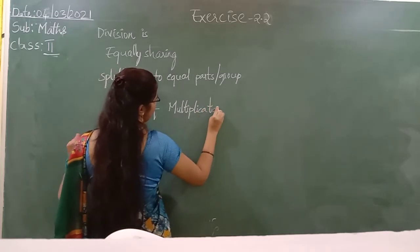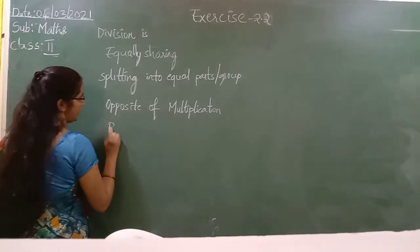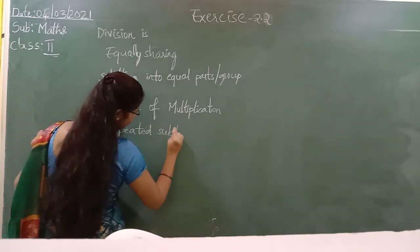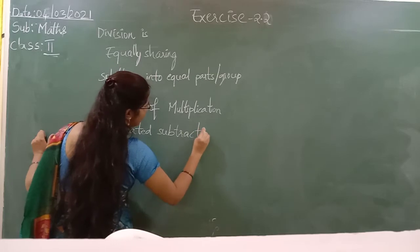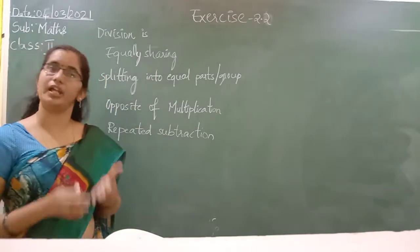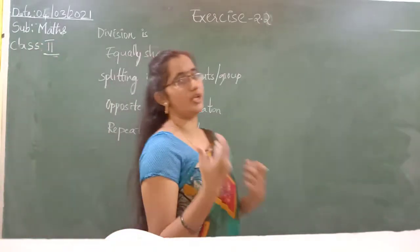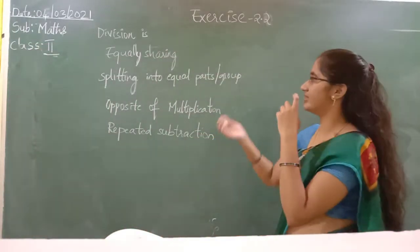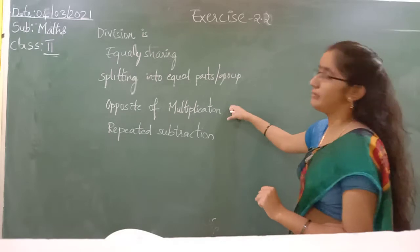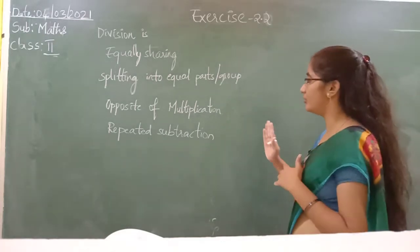What is the other one? Repeated subtraction. We have done three exercises in exercise 6.1. We have done equally sharing, as in 2.1, first part — rabbits: 6 carrots are distributed among 3 rabbits equally. And we have done splitting into equal parts or groups, and also the opposite of multiplication. Now we are going to do repeated subtraction.